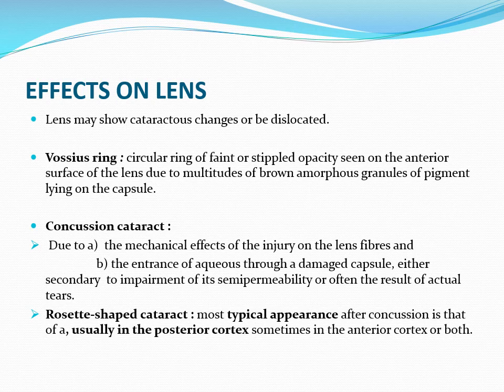Effects on the lens from blunt trauma: there can be dislocation or subluxation. In subluxation, zonules are partially ruptured and the lens remains in the pupillary area, with iridodonesis and phacodonesis. In dislocation, zonules are fully ruptured 360 degrees — the lens falls into the vitreous or comes into the anterior chamber. Dislocation is an emergency: if it falls into the vitreous it may cause retinal damage and detachment; if it enters the anterior chamber it causes endothelial damage and secondary glaucoma.